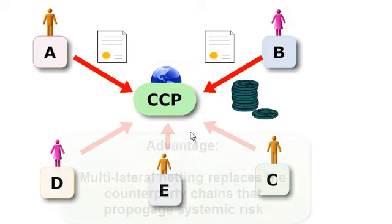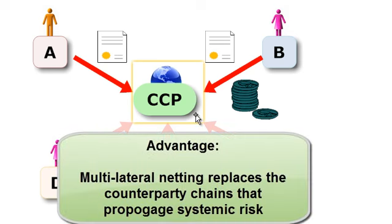And so the key advantage of the central counterparty is the idea that it can reduce systematic risk. Instead of the bilateral contract that through counterparty chains propagates systematic risk, the central counterparty becomes the counterparty and the means for multilateral netting that's supported with collateral requirements.